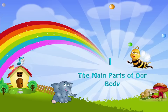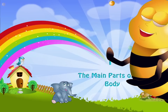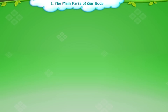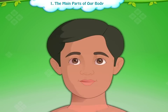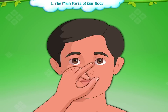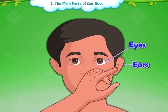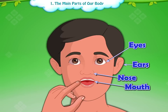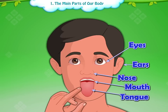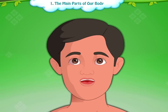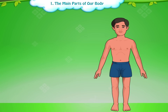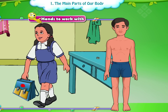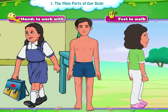Chapter 1: The Main Parts of Our Body. Every human being has eyes, ears, nose, mouth and tongue. We also have hands to work with and feet to walk.